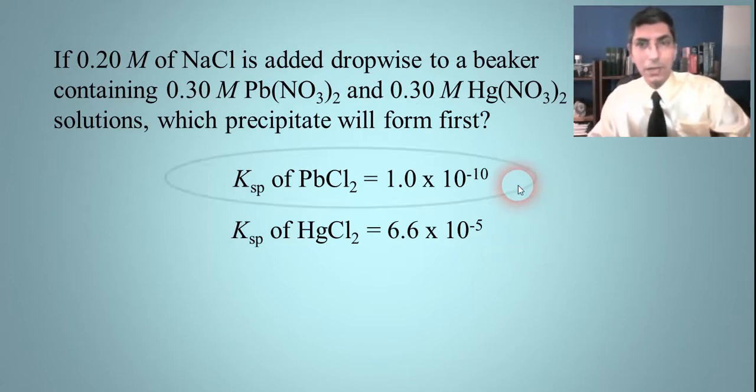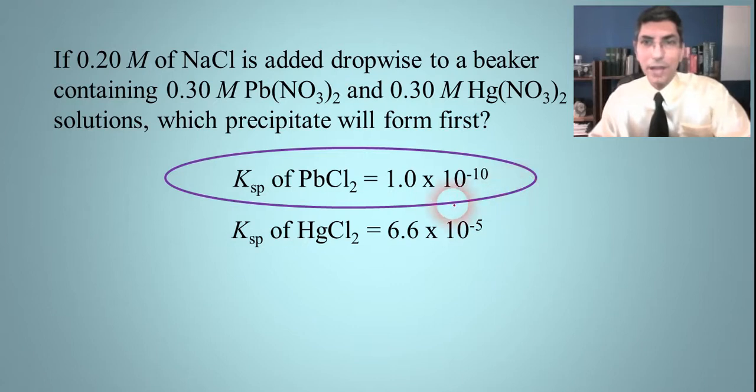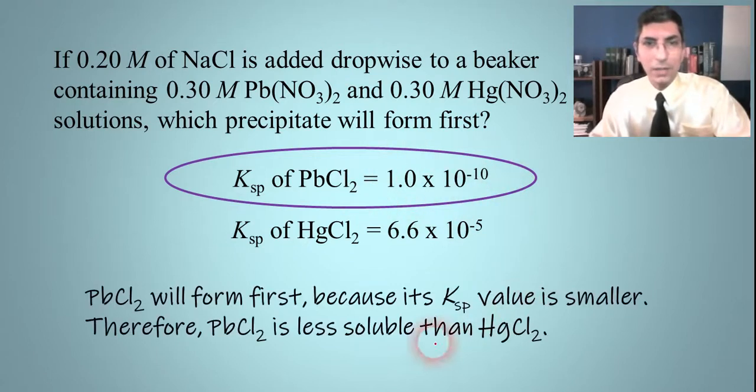So in this case, that means that the answer is going to be lead(II) chloride. That's because it has the smaller value for KSP, and so when we compare these, we can say yeah, lead(II) chloride is less soluble than that mercury(II) chloride. It'll take a little longer to make the mercury(II) chloride start to precipitate out.